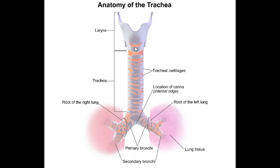The trachea marks the beginning of the tracheobronchial tree. It arises from the lower border of the cricoid cartilage, located in the neck, and it is a continuation of your larynx. It travels down into your superior mediastinum and then it will bifurcate — meaning it splits into two.